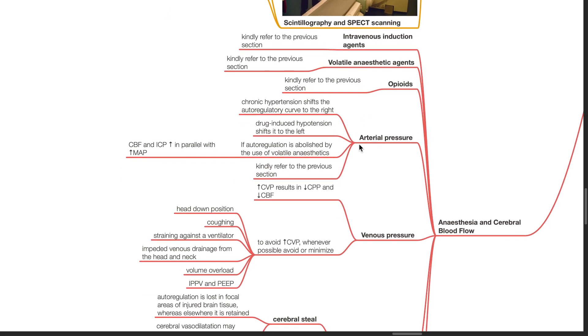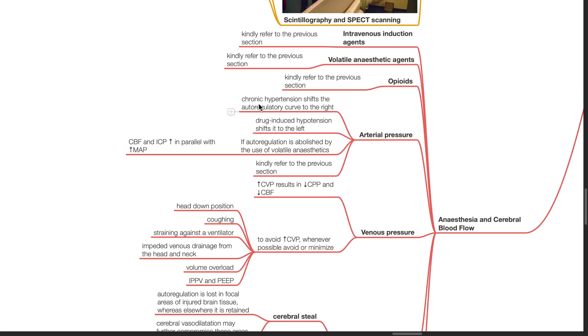Arterial pressure. Chronic hypertension shifts the autoregulatory curve to the right. Drug-induced hypotension shifts it to the left. If autoregulation is abolished by the use of volatile anesthetics, CBF and ICP increase in parallel with increases in MAP.